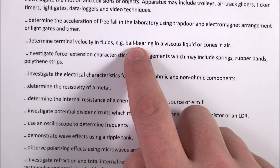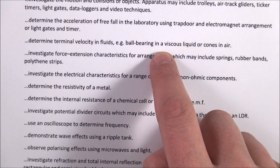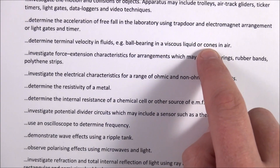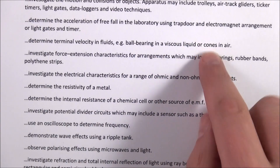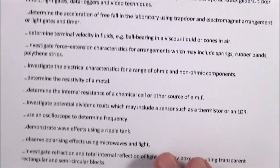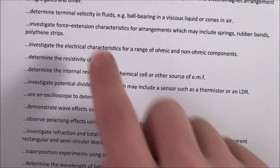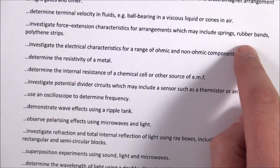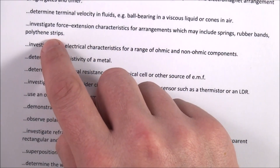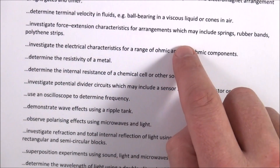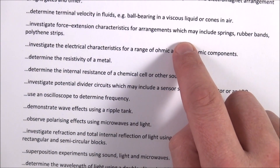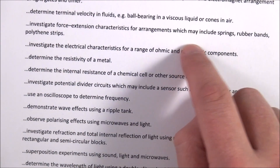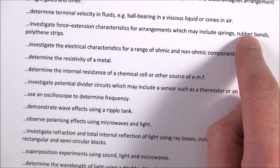For terminal velocity in a fluid, if you drop a ball bearing in washing-up liquid, or maybe drop a paper cone in air, you can work out its terminal velocity. There's also the topic of springs, rubber bands, or polythene strips — when you put a mass on them you can see the extension and therefore look at things like Hooke's Law.